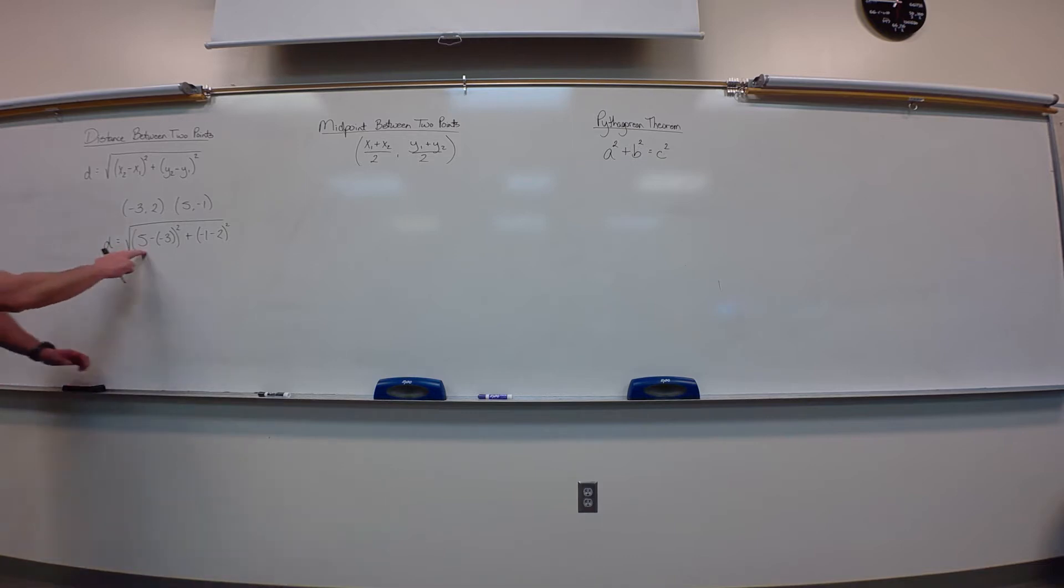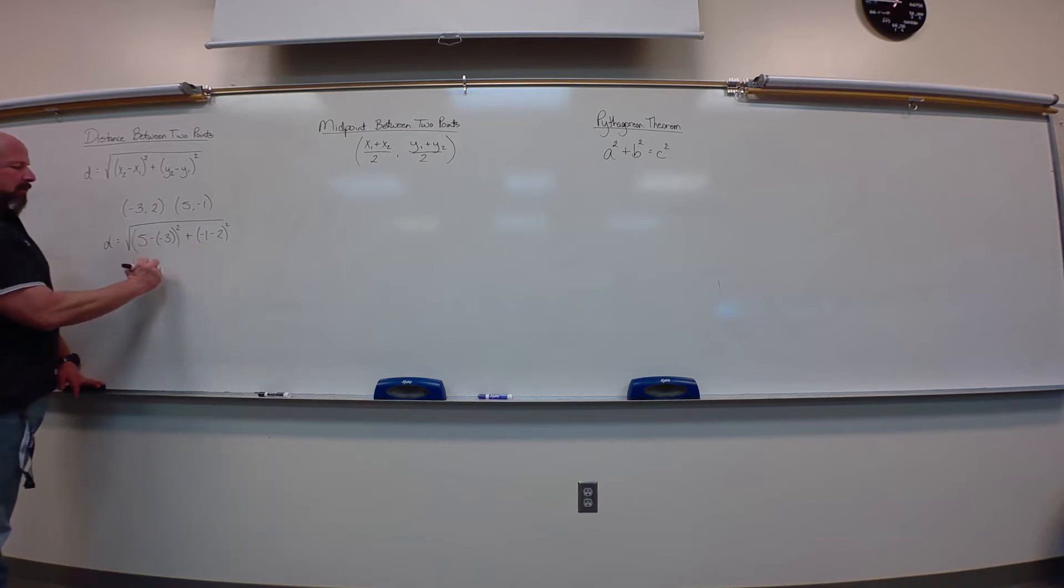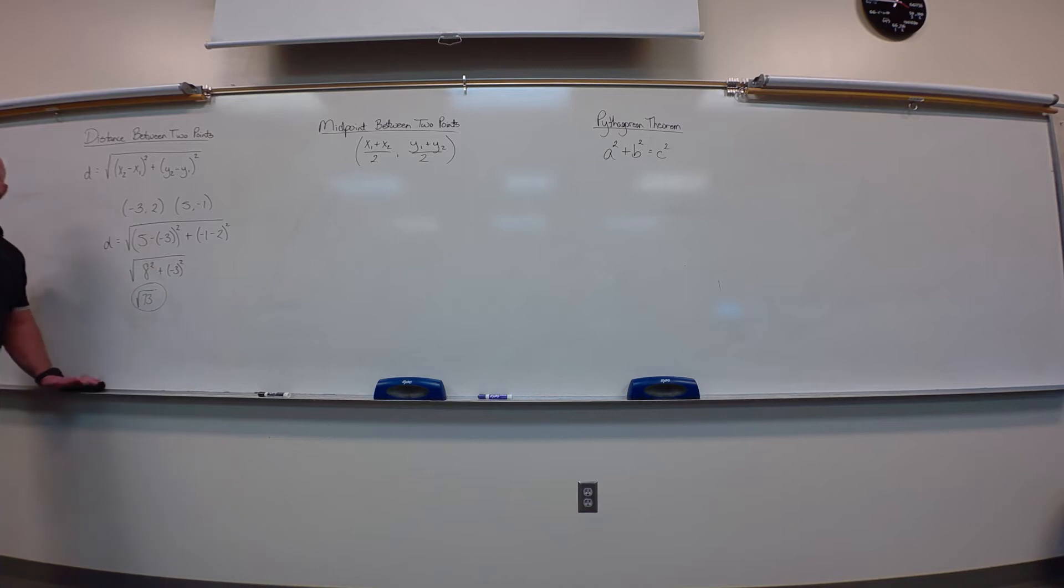So, we're going to have five minus negative three is eight. So, we'd have eight squared. Negative one minus two is negative three. So, that would give us, let's see, 64 and nine is 73. There's my distance, the square root of 73. Not too bad. So, if the square root simplifies, we'll simplify it. If it doesn't, decimals are fine, but there's also nothing wrong with root 73.